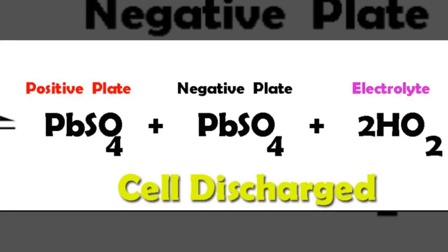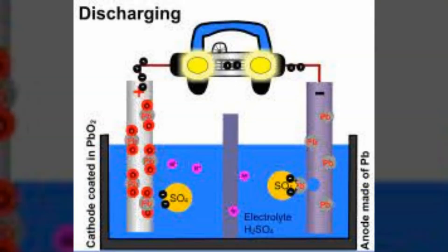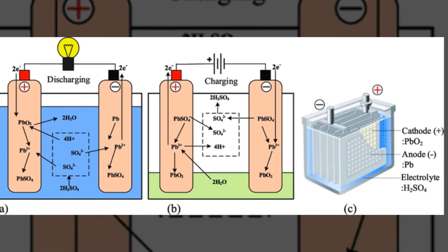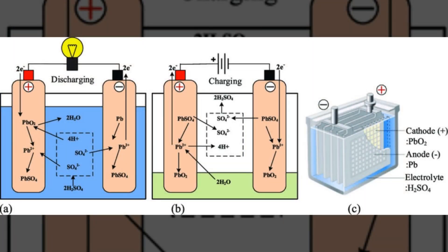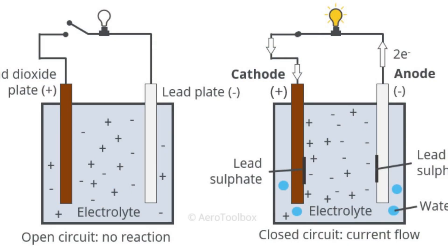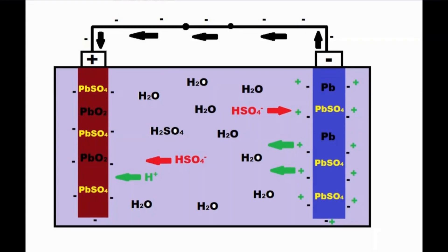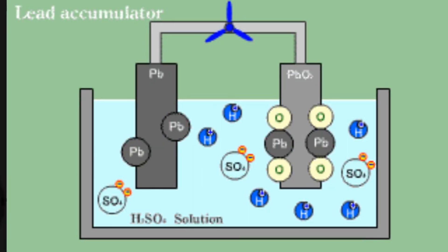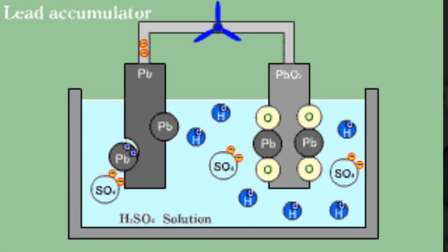When the battery discharges, that is when it provides power, a chemical reaction occurs. The lead dioxide on one plate reacts with the sulfuric acid to create lead sulfate and water. At the same time, the pure lead on the other plate also reacts with the sulfuric acid to form lead sulfate. This process releases electrons, which flow out of the battery and provide the electrical energy that powers your device.